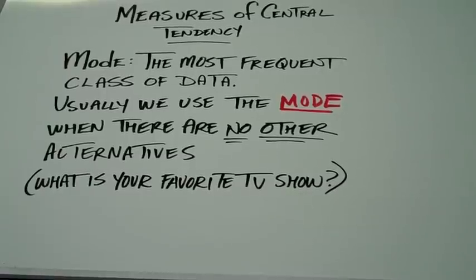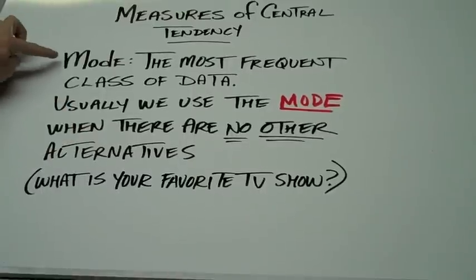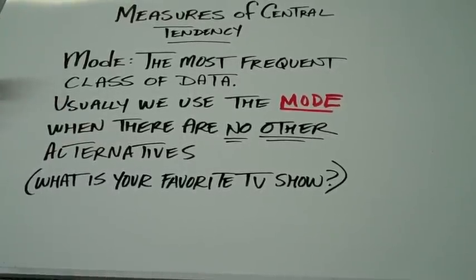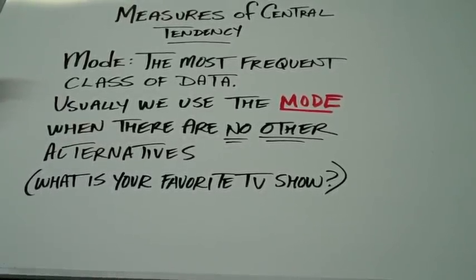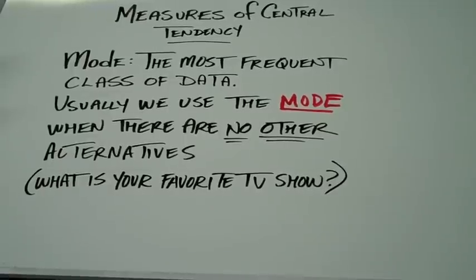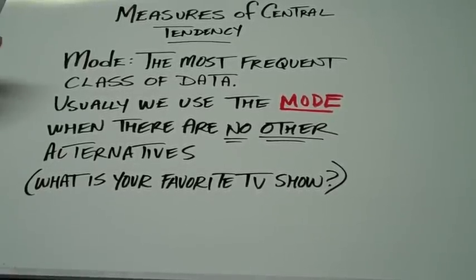The first measure of central tendency we're going to talk about is the mode. The mode simply means the most frequent class of data. For example, if we're looking at shoe size, it would be maybe a ten for boys. The most common shoe size would be ten, so that would be the mode.